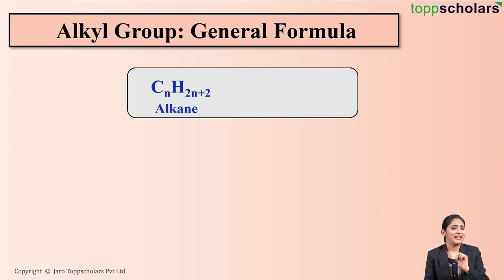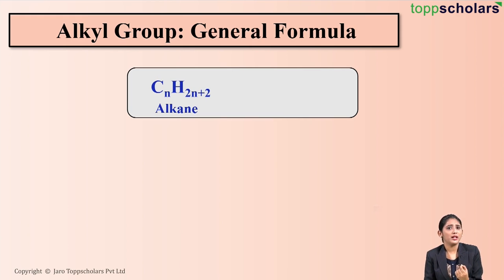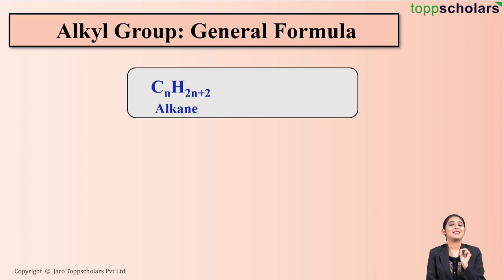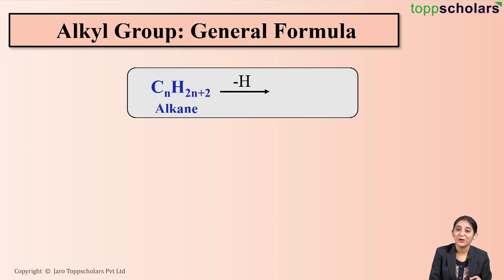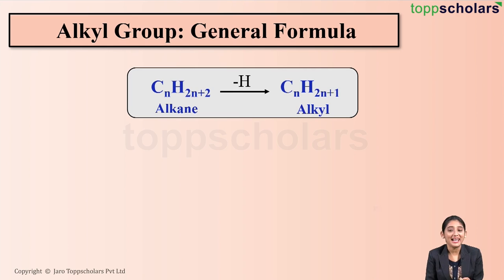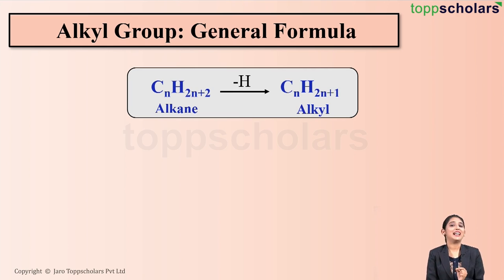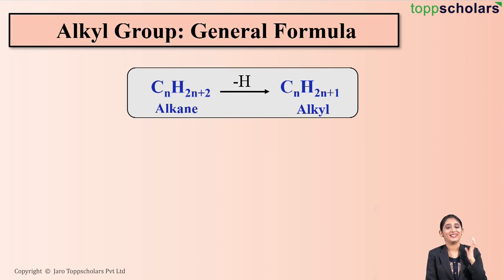We said that an alkyl group is obtained by removing one hydrogen atom from an alkane. So similarly, the general formula of an alkyl group is obtained by removing one hydrogen atom from the general formula of alkane. So what do you get? Yes, CnH2n+1. So the general formula of alkyl group is CnH2n+1.